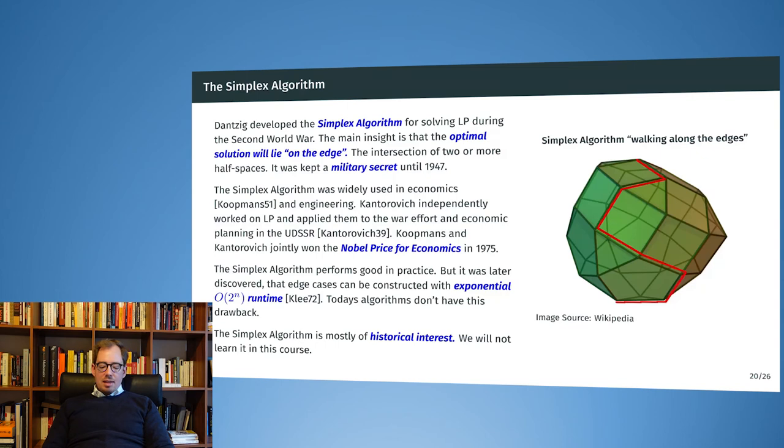George Dantzig was also the inventor of the simplex algorithm and he developed that during World War II. Actually the military kept the algorithm secret until 1947 and it was then published in the 50s, because it was of such importance to the war effort and they wouldn't want to leave this algorithm to optimize the military programs to the enemy.